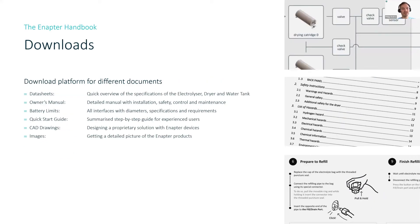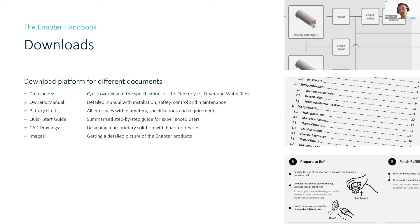Let's talk about the downloads available on the handbook. There are data sheets for all devices, the owner's manual with installation guidelines, safety, control, and maintenance information, the battery limits document which describes all interfaces, specifications, diameters, and requirements, and the quick start guide, especially for experienced users who want a quick repetition to get started. There are also CAD drawings, useful for integrators who want to see how the device will look in the on-site system, and pictures of the Enapter products.